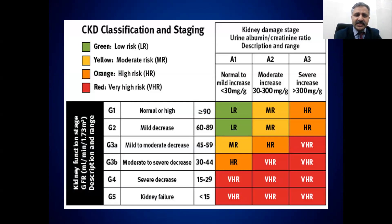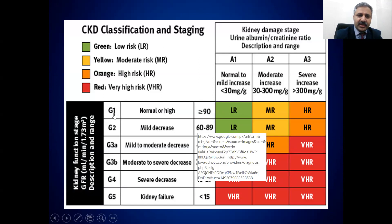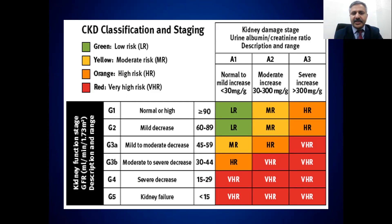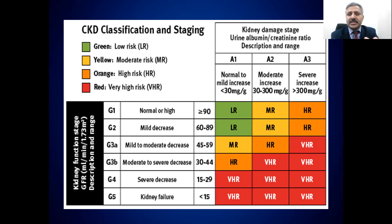This is the newer CKD classification and staging. It is divided based on GFR into stages 1 to 5. Stage 5 is when GFR is less than 15; stage 4 is 15 to 30; stage 3 is 30 to 60; stage 2 is 60 to 90. If GFR is more than 90 but there is some other abnormality — for example, cysts in the kidney or proteinuria present for more than three months — that would be stage 1, meaning GFR is normal but something is wrong with the kidneys.